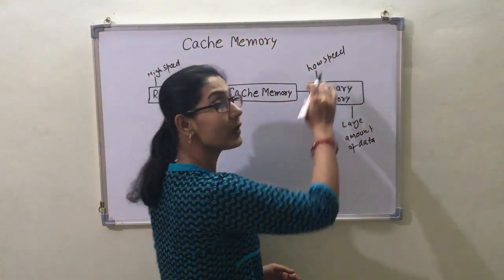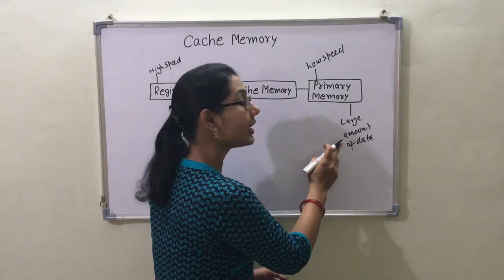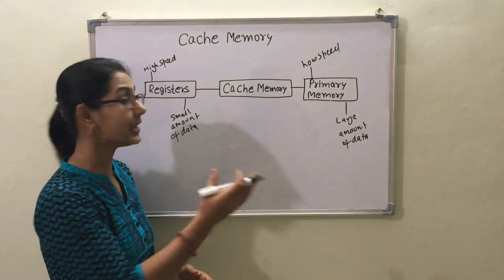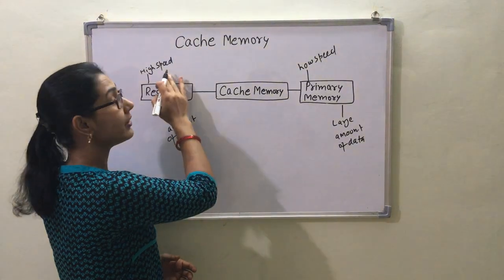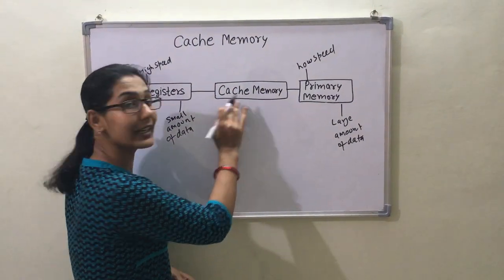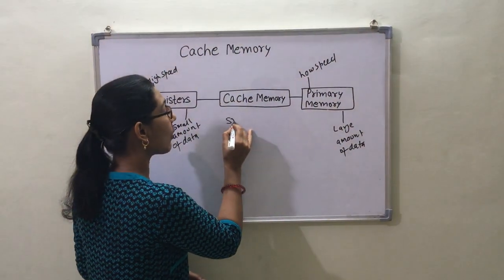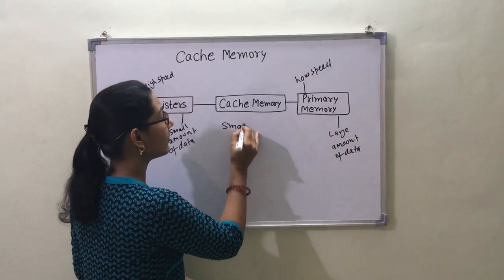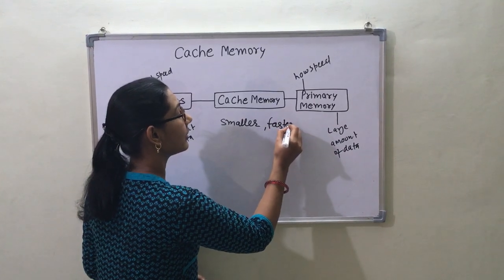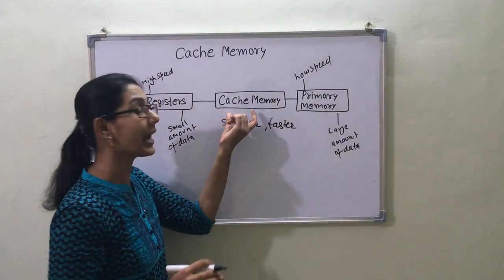Primary memory has low speed and stores a large amount of data. So to bridge these speed differences we have cache memory. Cache memory is a smaller and faster memory as compared to primary memory.